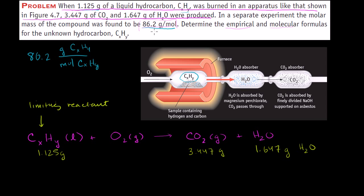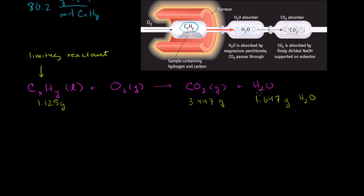Let's figure out the empirical formula first. We can find how many moles of carbon dioxide and water are produced, then determine the moles of carbon and hydrogen atoms in the products. The ratio of carbons to hydrogens in the products must be the same as in the reactants, since all the carbons and hydrogens came from our mystery hydrocarbon. Let's start by figuring out how many moles of each substance we have.